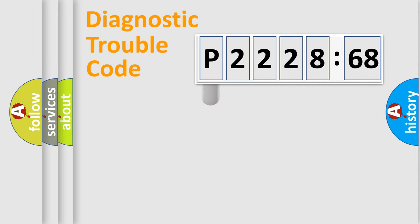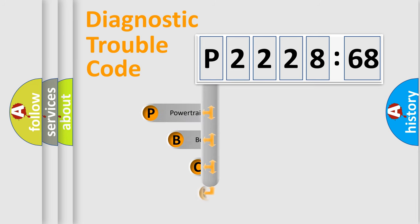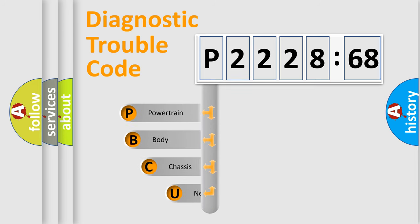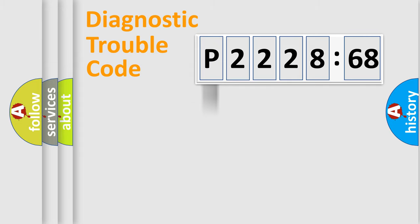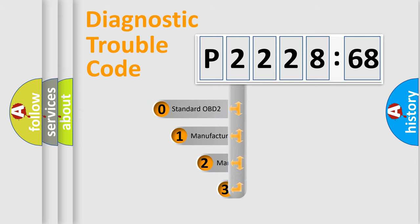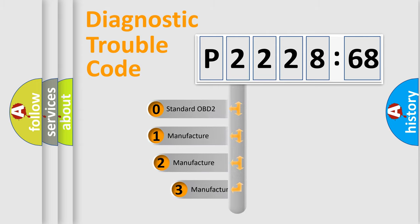First, let's look at the history of diagnostic fault code composition according to the OBD2 protocol, which is unified for all automakers since 2000. We divide the electric system of an automobile into four basic units: Powertrain, Body, Chassis, and Network. This distribution is defined in the first character of the code.